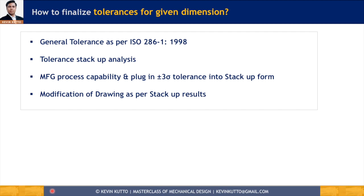This was the process I had explained: we start with general tolerances as per ISO 286 standard, then we do tolerance stack-up analysis, and then we also do manufacturing process capability for critical dimensions only — we cannot do this for all because it is a time-consuming process. After that study we plug in the plus-minus three sigma variation coming from the process into the tolerance stack-up sheet, and once we plug in that variation we check the Cp/Cpk values.